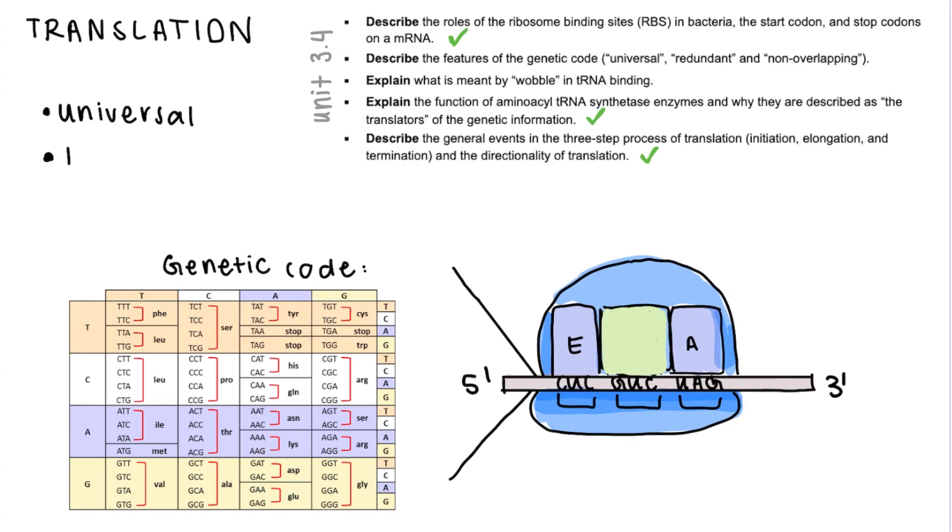Second of all it's redundant which means that many different codons can code for one same amino acid. For example as we can see here if the mRNA had a UUU as a codon, that would code for phenylalanine but then also if you had UUC that would also code for phenylalanine.